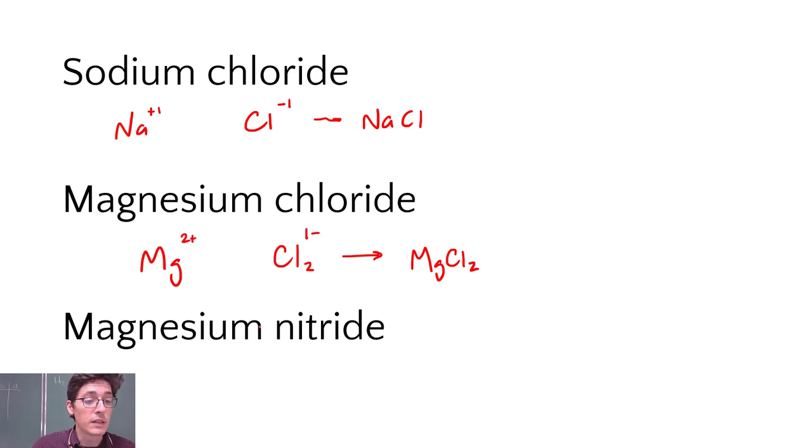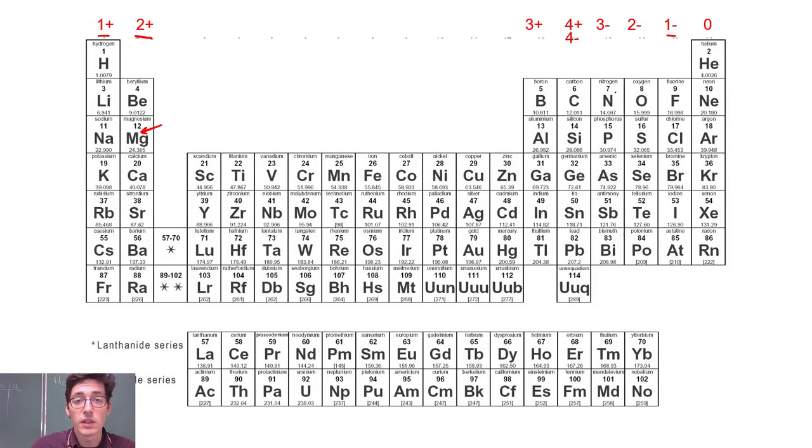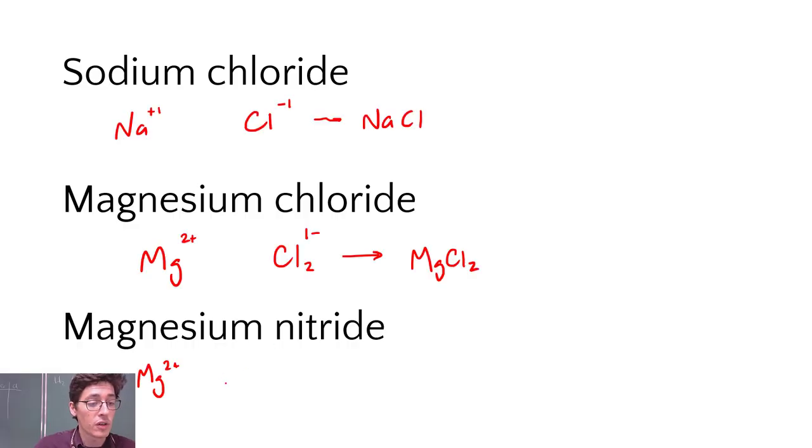And still trickier. Magnesium nitride. Now I've still got magnesium and it's a two plus. Nitride is nitrogen. So let's come over here on our periodic table. Nitrogen right here number seven. So it has a three negative charge. So we need to balance these charges out. So we've got N with a three negative.